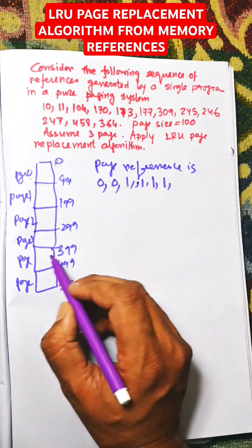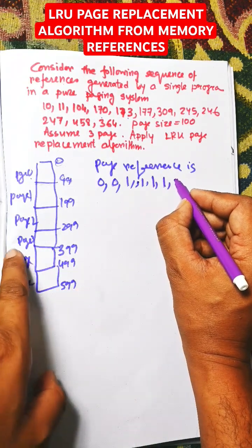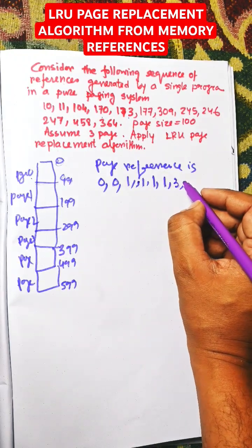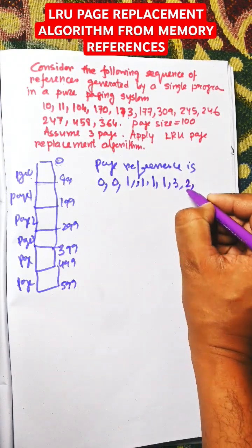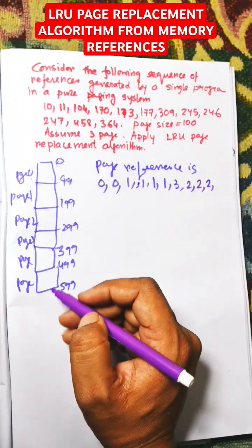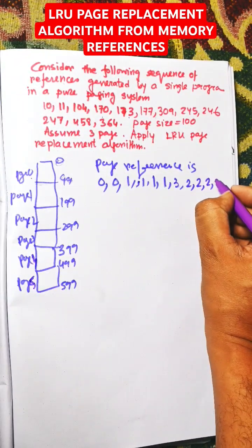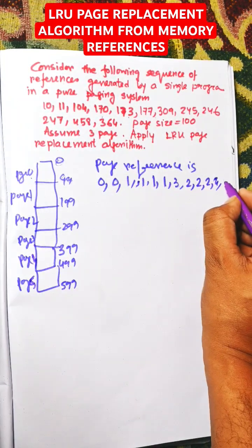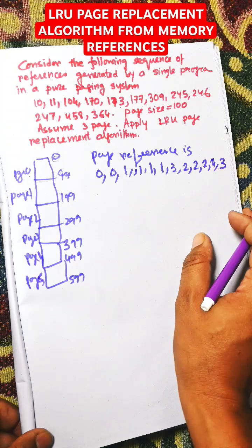309 in page 3, 245 in page 2, 246 in page 2, 247 in page 2, 458 in page 4, and 346 in page 3. So these are the page references.